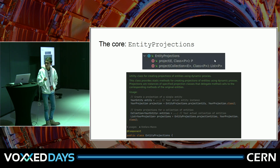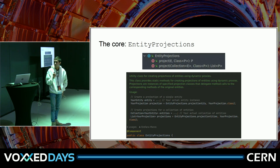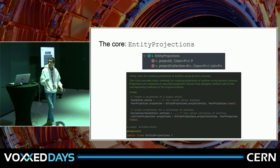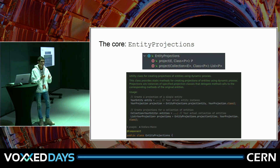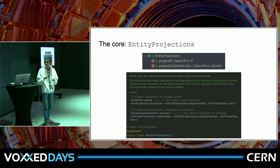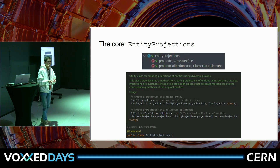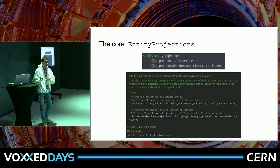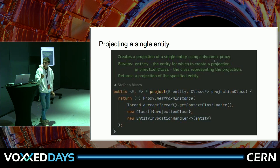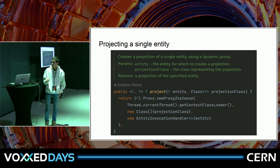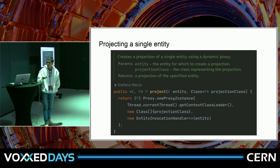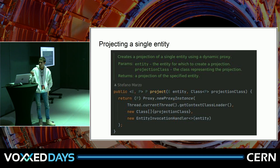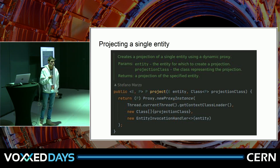The core of our implementation is the EntityProjections class, which has two methods. The first one is the project method — it takes the entity, the object, and the class we want to project to. The other method projects a collection of entities through the class. It's simple: if you have an object with name, surname, and age, and the projection class only has name and surname as fields, you pass both to the method. The implementation creates a new proxy and calls the EntityInvocationHandler passing the entity.